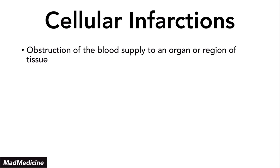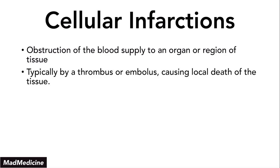Typically this occurs due to either a thrombus or an embolus, which will cause local death of the tissue. A thrombus is going to occur at a site in the blood vessel — you get a plaque that eventually grows to occlude part or all of that blood vessel. This is called a thrombus.